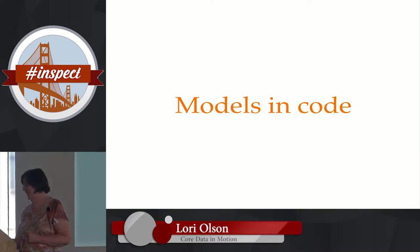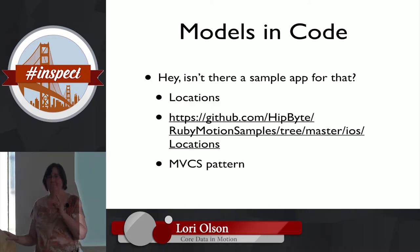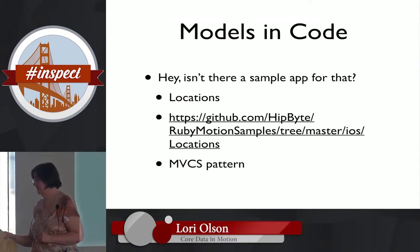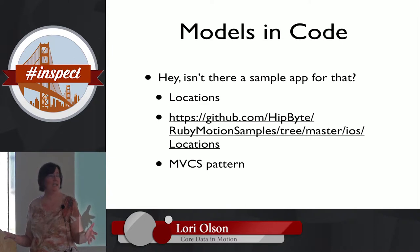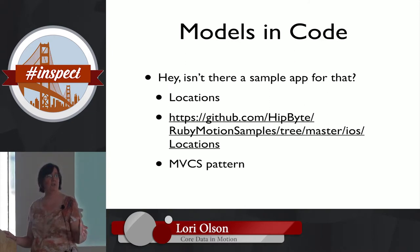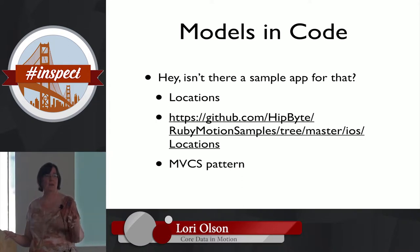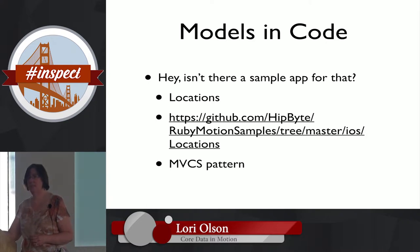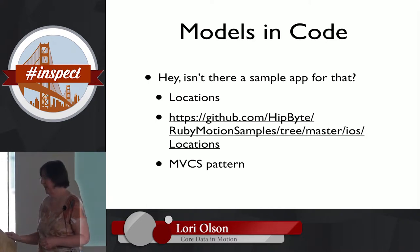There is a sample app in the RubyMotion samples called Locations, and it is a Core Data app. If you haven't looked at it, you should. It follows the MVCS pattern — Model View Controller Store. I believe the Big Nerd Ranch guys came up with that pattern and it's quite useful.